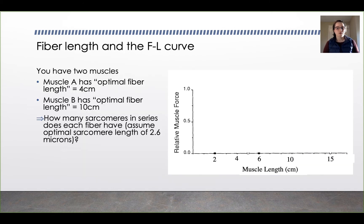Let's think about the force-length curve and consider two different muscles. Muscle A has an optimal fiber length of four centimeters, and muscle B has an optimal fiber length of 10 centimeters. How many sarcomeres in series does each fiber have, assuming 2.6 microns for the sarcomere length? You divide the fiber length by the optimal sarcomere length of 2.6 microns. For the four-centimeter muscle, that's 15,385 sarcomeres, and for the 10-centimeter muscle, that's 38,462 sarcomeres.